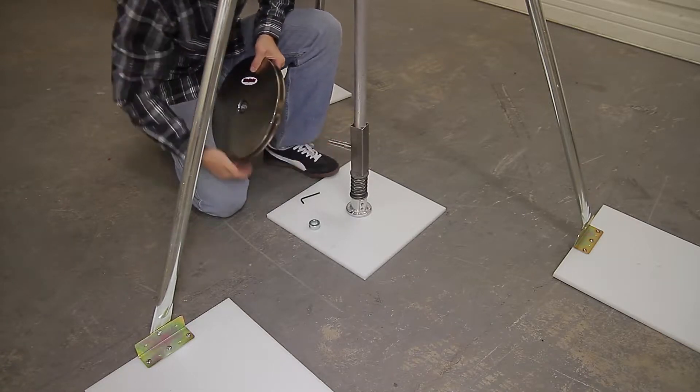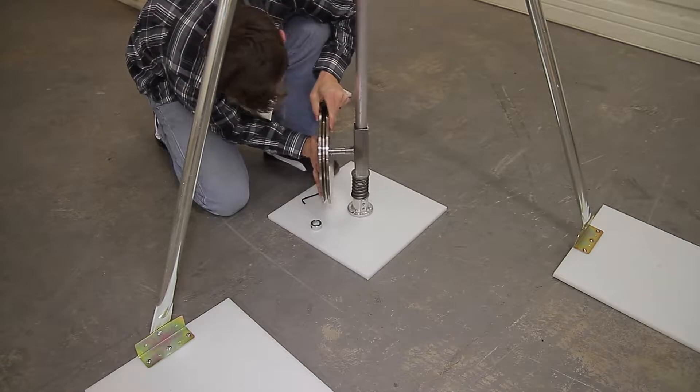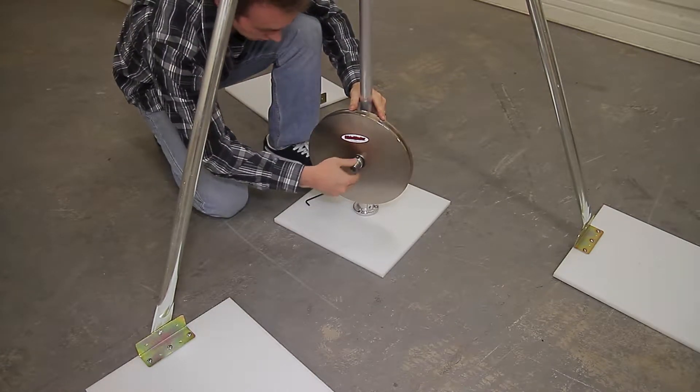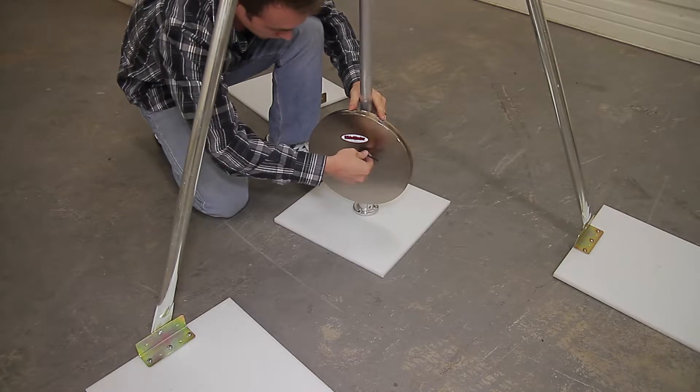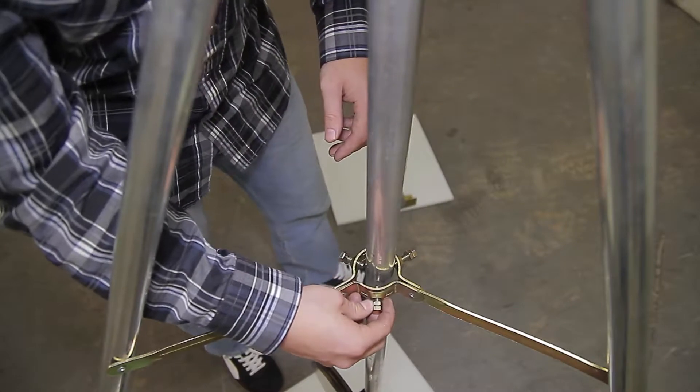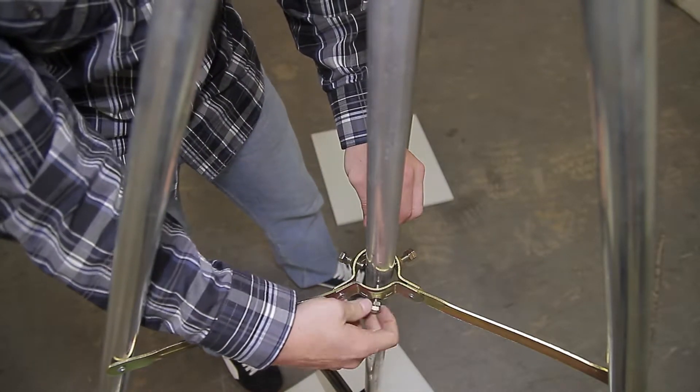Next we will add the weight and use a shaft collar to hold it in place. Next we will hand tighten the tripod by pulling out and screwing.